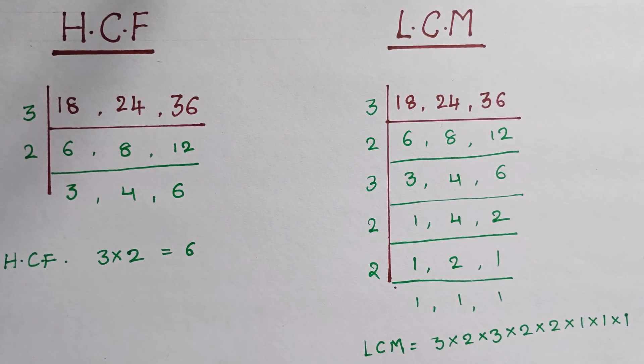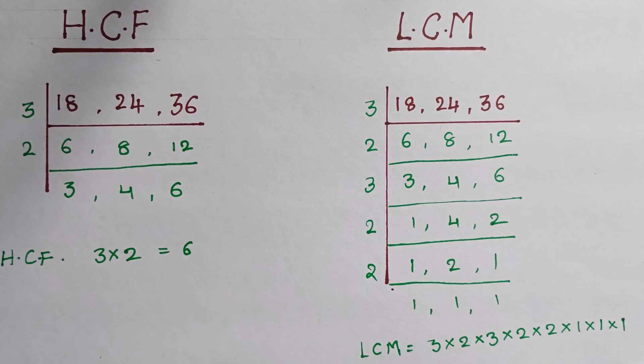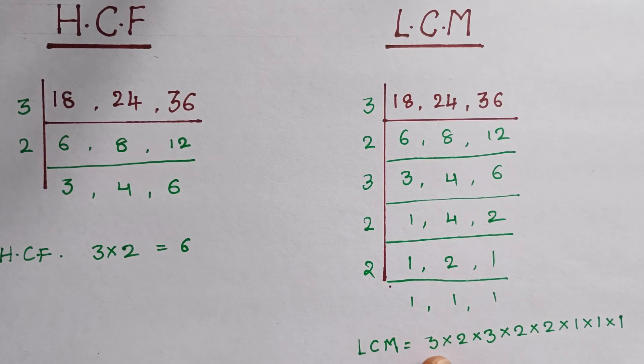So now 3 times 2 is 6, 6 times 3 is 18, 18 times 2 is 36, 36 times 2 is 72. So LCM is 72.